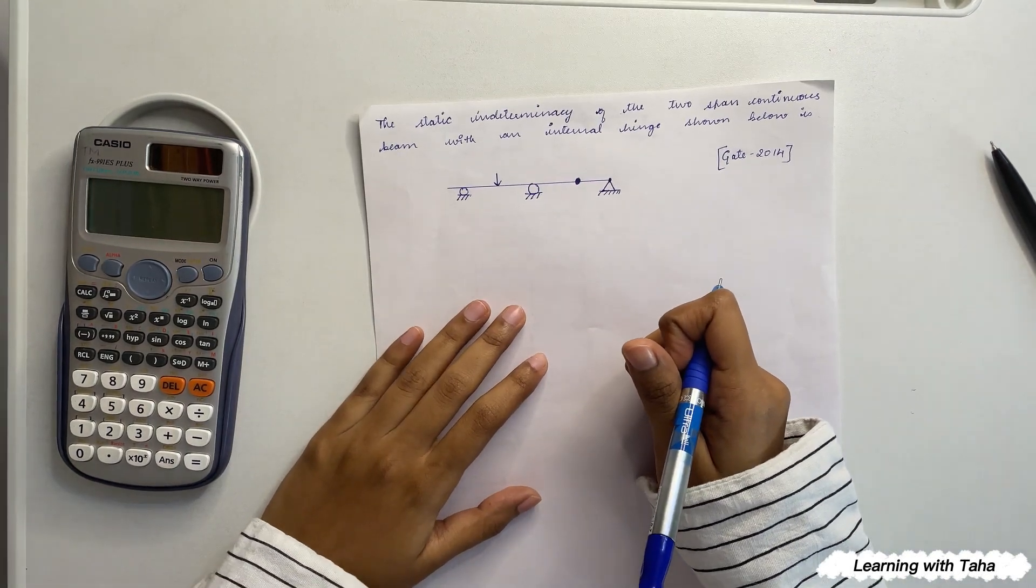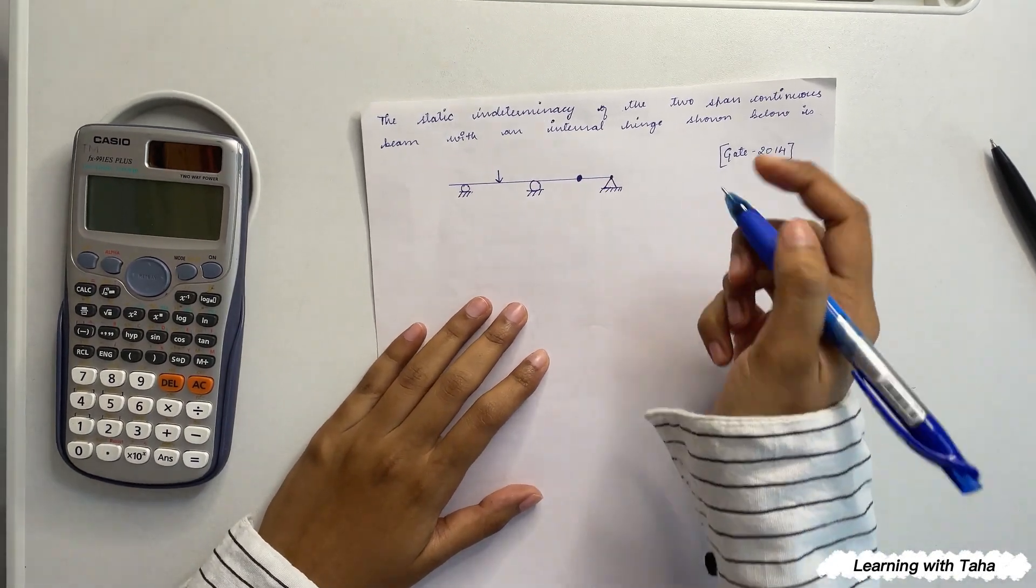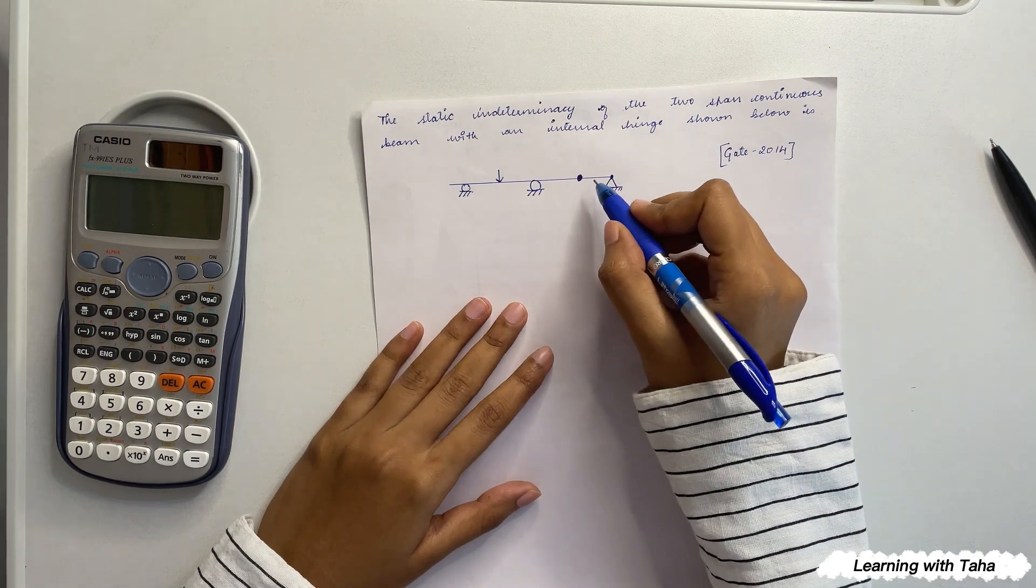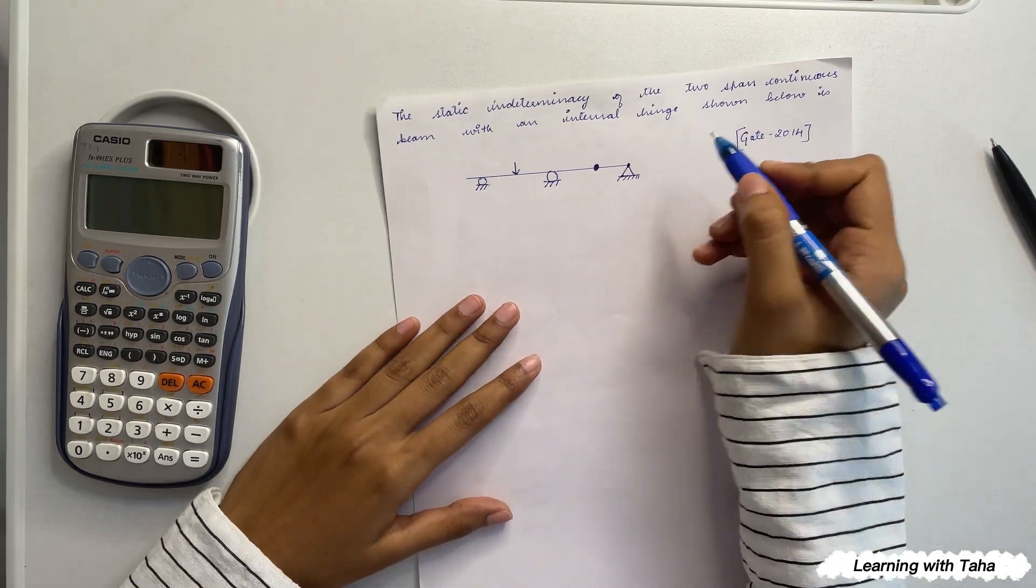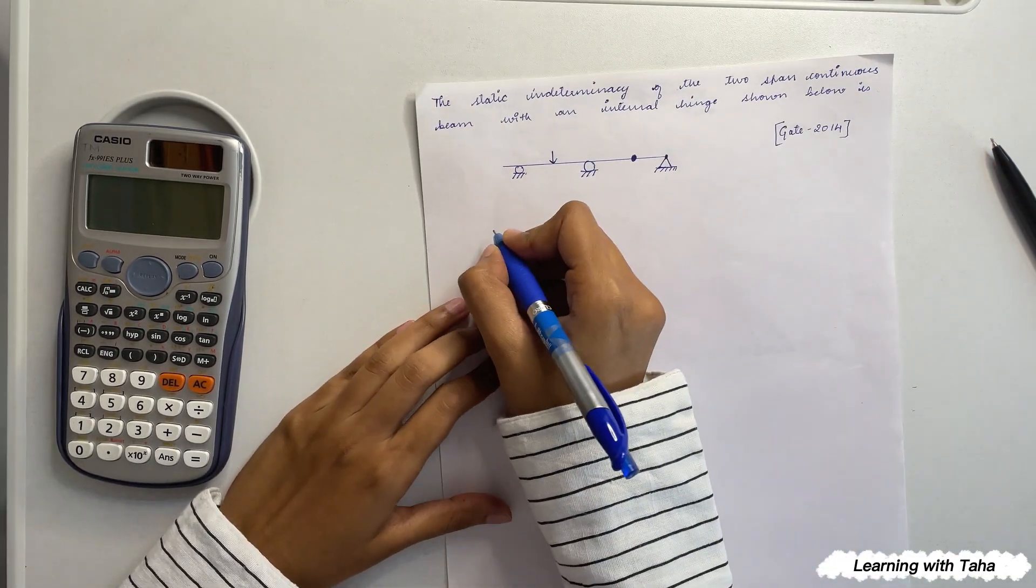This question is from GATE 2014. The static indeterminacy of the two-span continuous beam with an internal hinge shown below. So the static indeterminacy for beams...